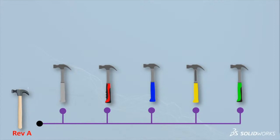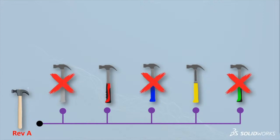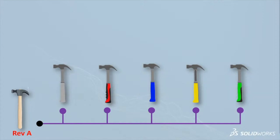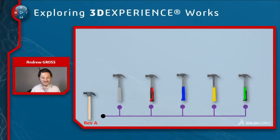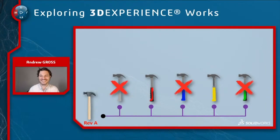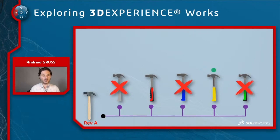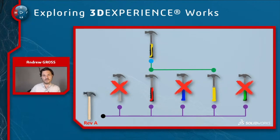A few of these designs didn't cut it. Two of the five were selected to move forward. We took some design elements from one, some design elements from the other, and kind of merged those together — and that's how we came up with the new hammer design that's now at Home Depot or something. You basically get the best of both worlds.